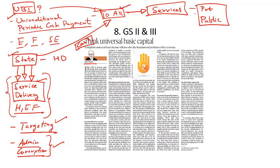However, this arrangement is fraught with problems and disadvantages. First, does the state have enough revenue to provide a basic income to everyone? Second, will the cash provided to citizens be sufficient to access all required services? Third, what is the quality of services provided by private and public service providers?